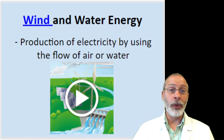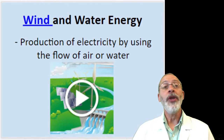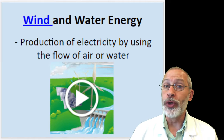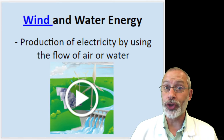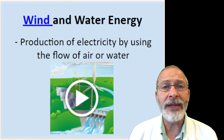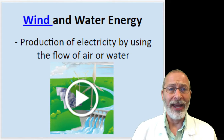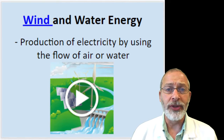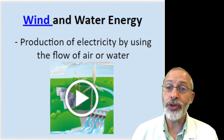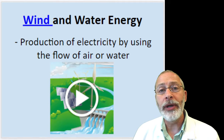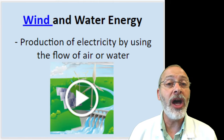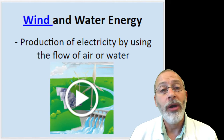We know what electricity is — the flow of electrons. We know how electricity can be generated using those principles we learned about over the last two weeks. With both wind and water, turbines can be rotated by the power of wind and water in order to generate electricity. Wind and water energy in broad terms is the production of electricity by using the flow of air or water.